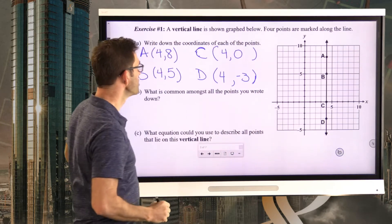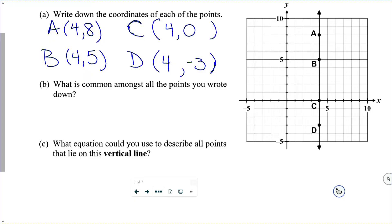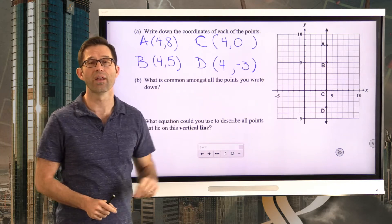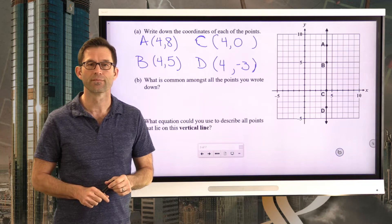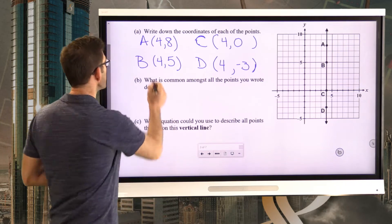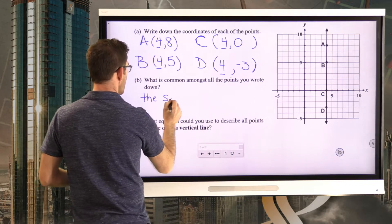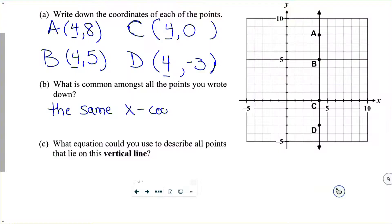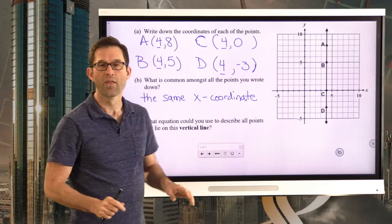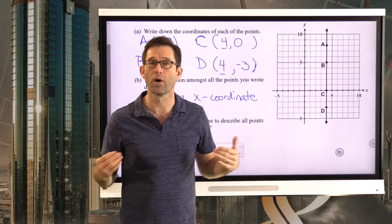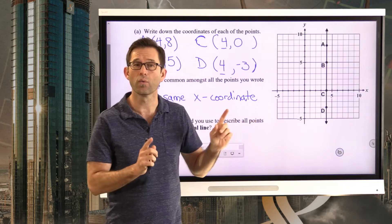Letter B asks a very important question: what is common amongst all the points you wrote down? What is it about these four points that are the same? Hopefully what's pretty obvious is that every one of these points has the same x-coordinate. Any point we pick off along this vertical line would have in common with all other points that the x-coordinate is equal to four.